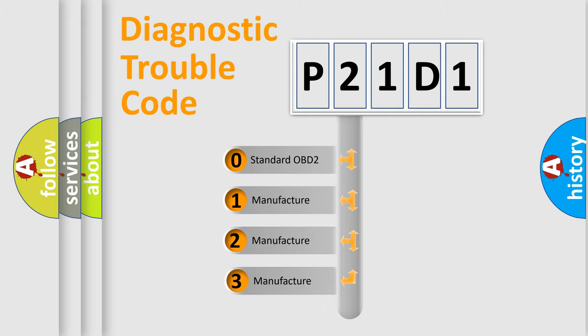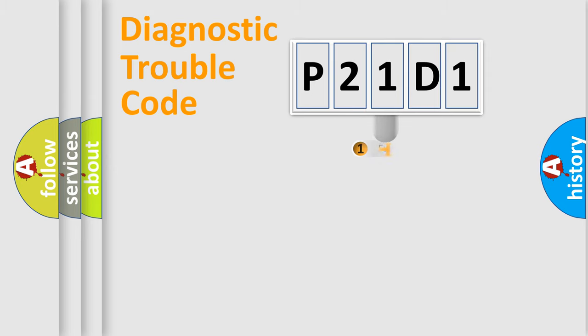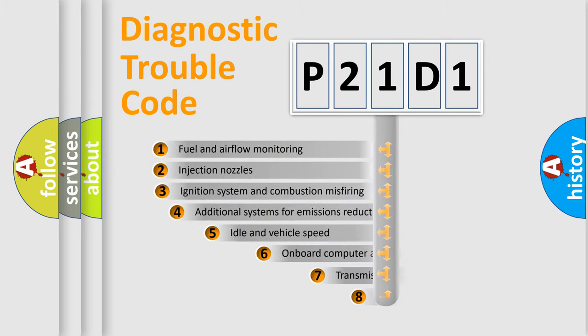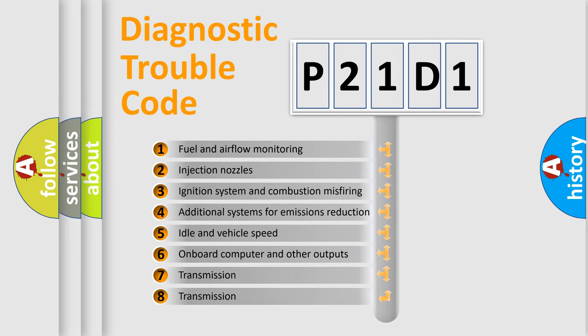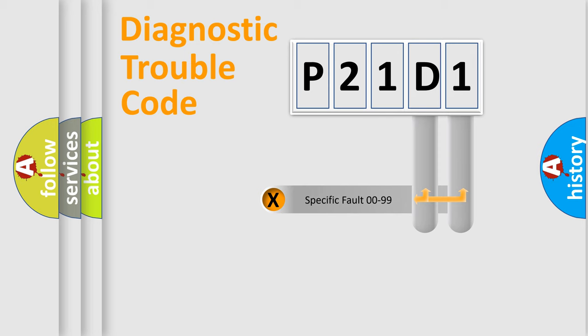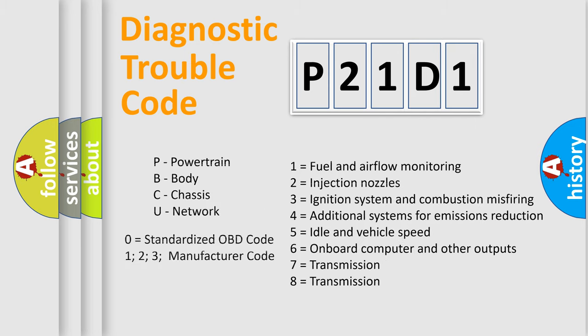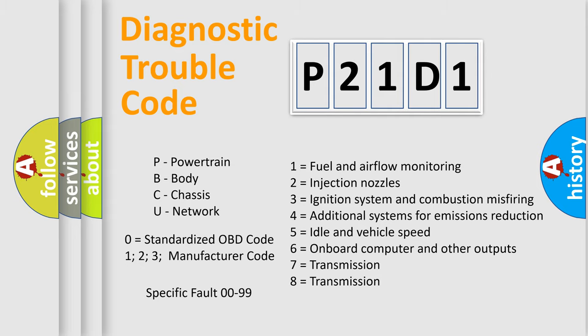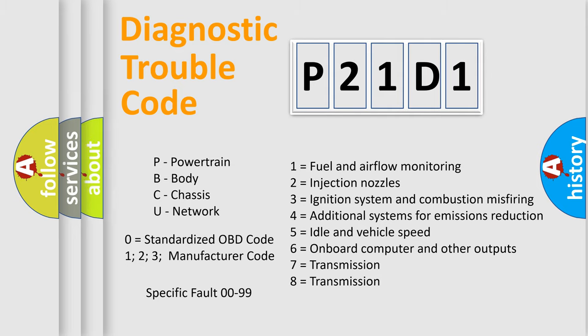If the second character is expressed as zero, it is a standardized error. In the case of numbers 1, 2, or 3, it is a manufacturer-specific expression of the car-specific error. The third character specifies a subset of errors. The distribution shown is valid only for the standardized DTC code. Only the last two characters define the specific fault of the group. Such a division is valid only if the second character code is expressed by the number zero.